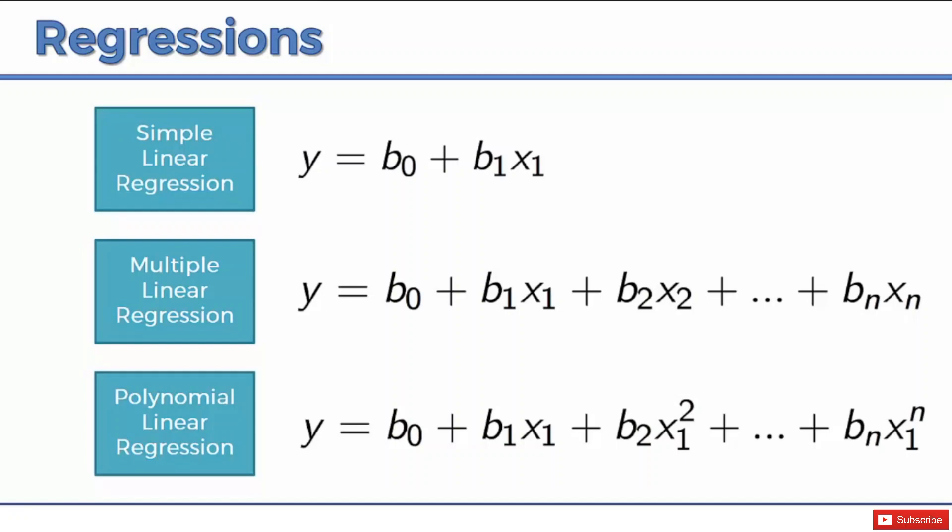So instead of x2, we have x1 squared. Instead of x3, we'd have x1 cubed. And so instead of xn, we would have x1 to the power of n. So basically, we're using one variable, but we're using the different powers of that variable.